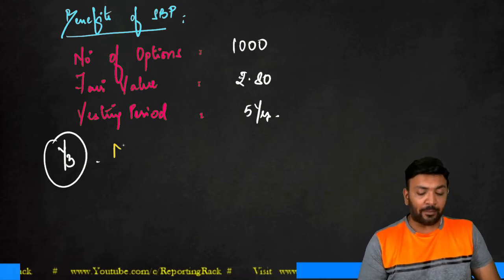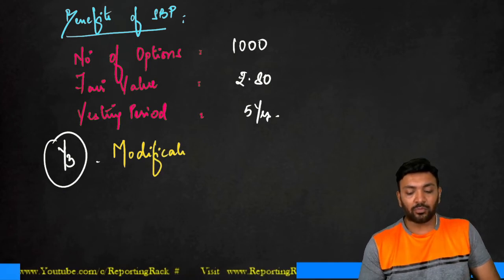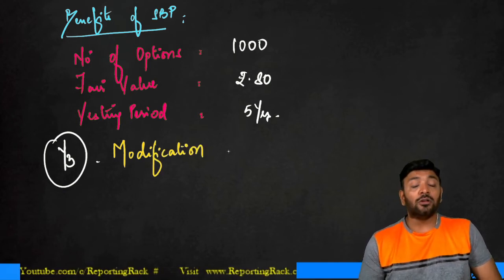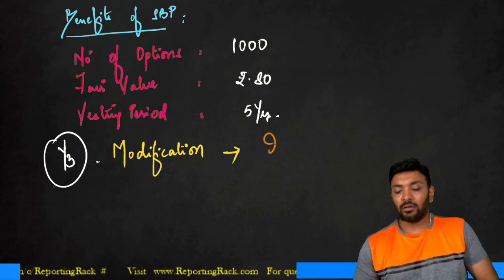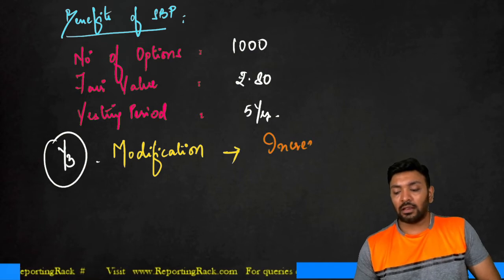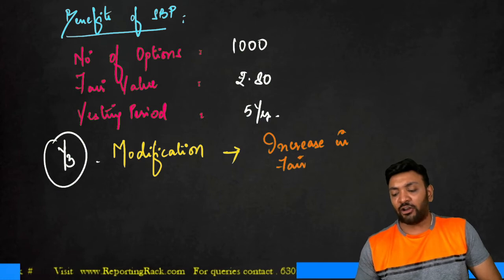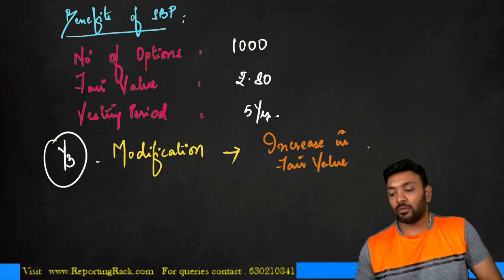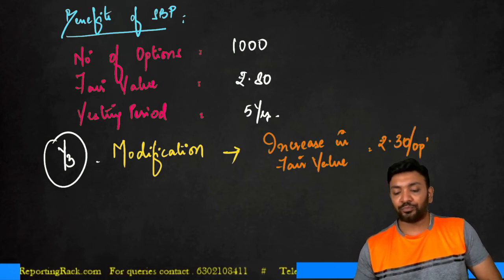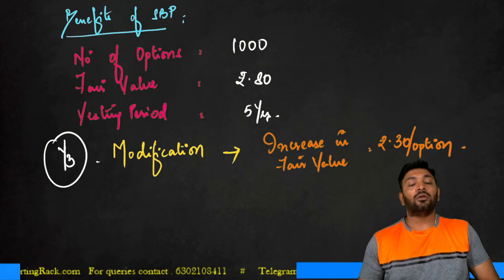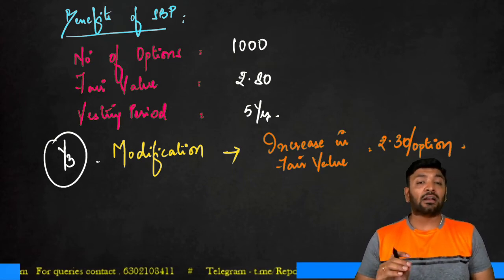In year three, there is a modification to the plan. This modification has given rise to an increase in fair value of 30 rupees per option. In such a case, how do I recognize the amount to be recognized each year?